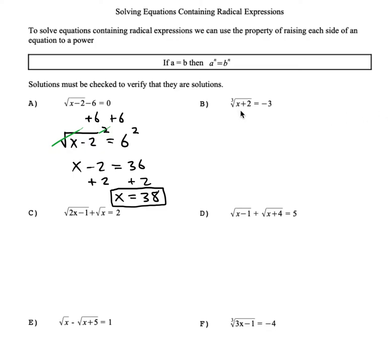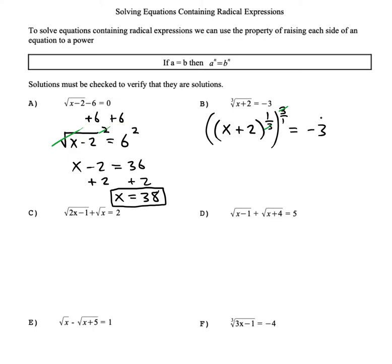Let's try the next one, which has a cubed root. To undo a cubed root, we think of it as a 1/3 power — rewrite the radical as a rational exponent. Then we raise both sides to the power of 3, since multiplying 1/3 by 3 cancels it out. The cubed root and cube cancel, giving us x plus 2 equals negative 27. Subtract 2 and we find x equals negative 29.